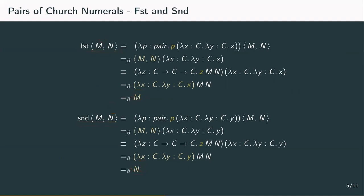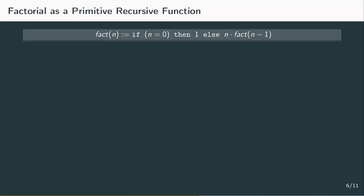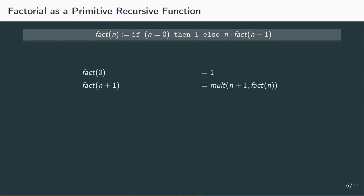We are now going to discover how we can use this notion of a pair and its components to compute the primitive recursive factorial function. In the untyped lambda calculus, we constructed factorial by implementing recursion through self-application or the use of a fixed-point combinator. In lambda 2, there is no self-application possible, nor is there a fixed-point combinator, so we have to do things slightly differently. Factorial of n is defined as 1 if n is 0, and n times factorial of n minus 1 otherwise. Written as a primitive recursive function, the recursion anchor is fact 0 equals 1, and the recursive case is fact n plus 1 equals n plus 1 times factorial of n.